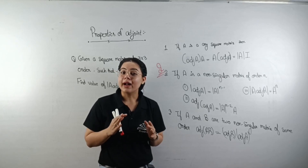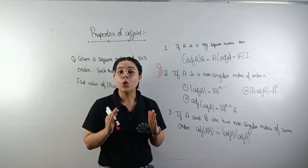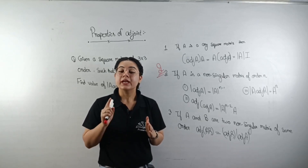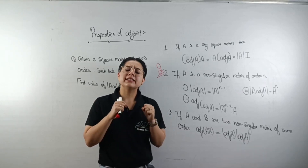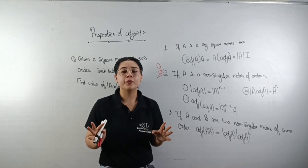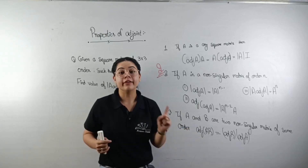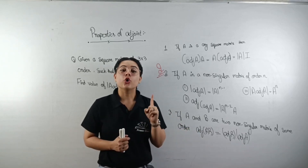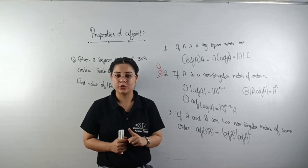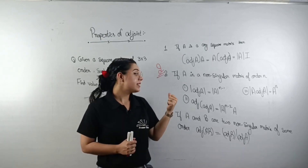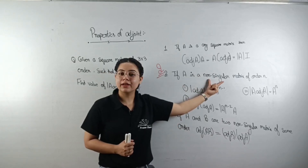And if the determinant of a matrix — that means |A| — is not equal to zero, meaning it is any negative or positive value but not zero, then the matrix is called a non-singular matrix. So our second property involves a non-singular matrix.